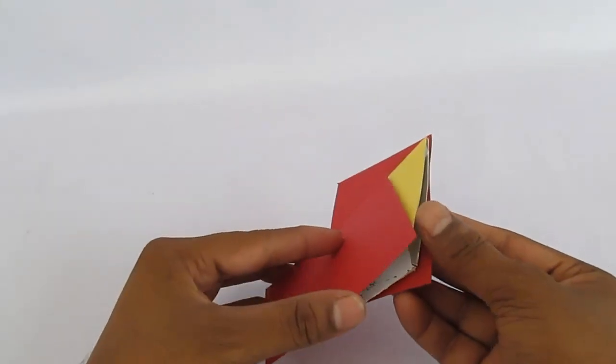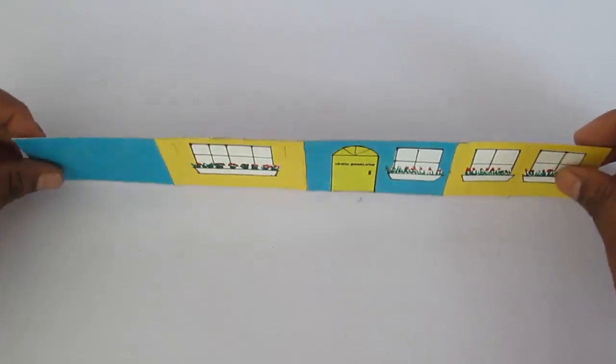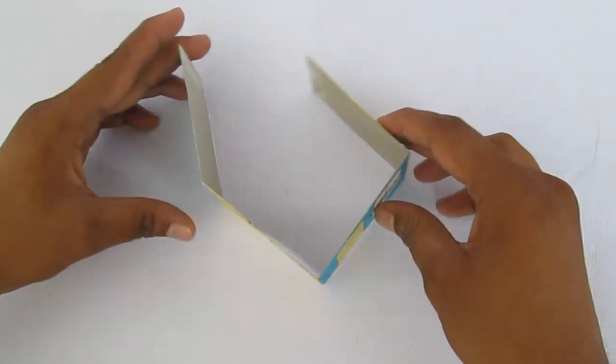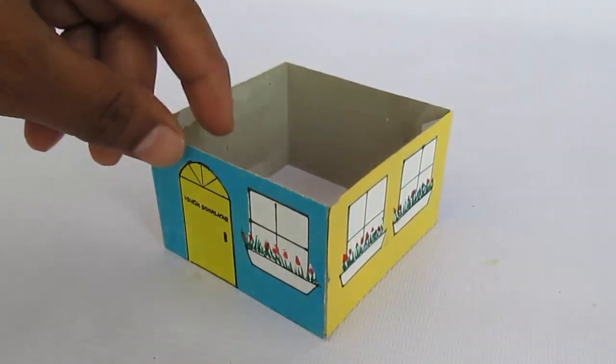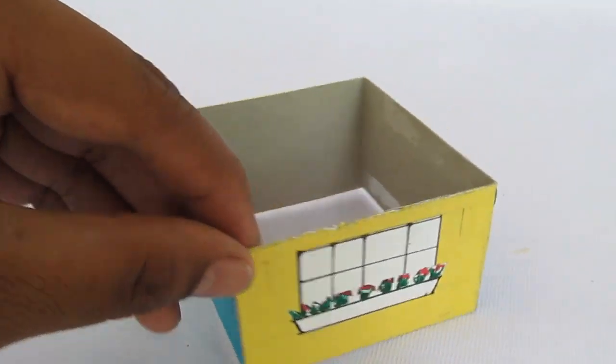Now make another large rectangle which will be the four walls of this cottage. The length of the rectangle should be four times the side of the triangle. Make the doors and windows on each side.